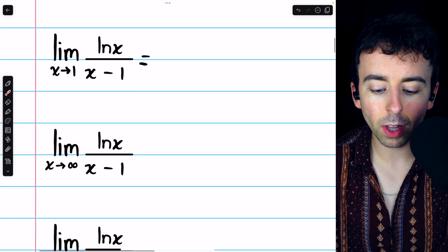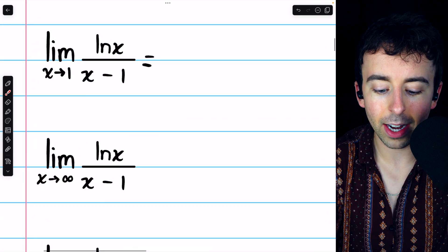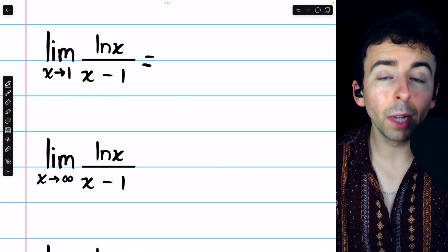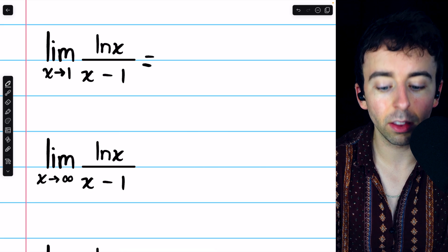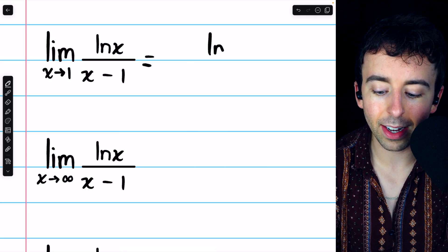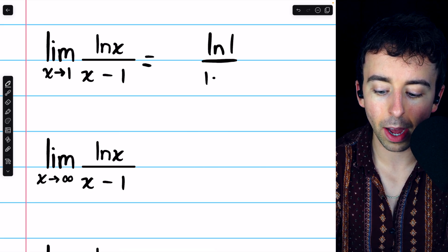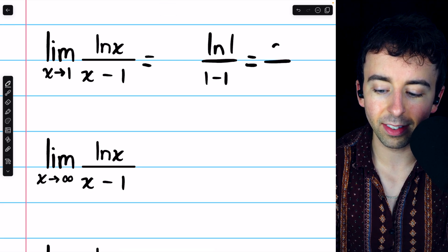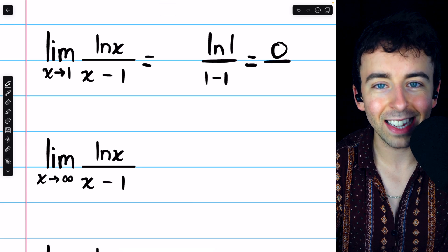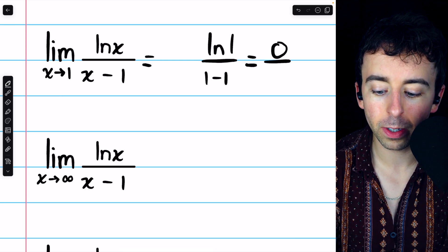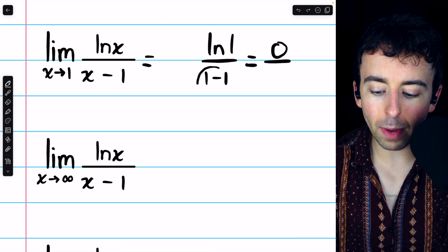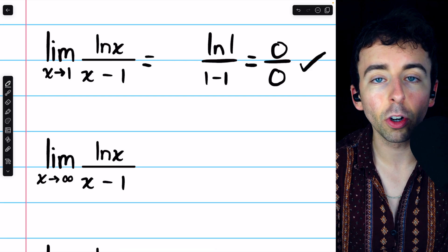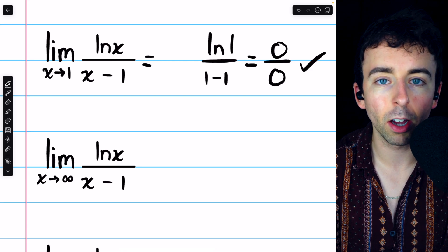Let's begin with the limit of the natural log of x divided by x minus 1 as x approaches 1. Plugging in x equals 1 to check the form of this limit, we get the natural log of 1 divided by 1 minus 1. The natural log of 1 is 0, because we must raise e to the power of 0 to get 1, and 1 minus 1 in the denominator is also 0. So this is in an indeterminate form, and we can apply L'Hopital's rule.